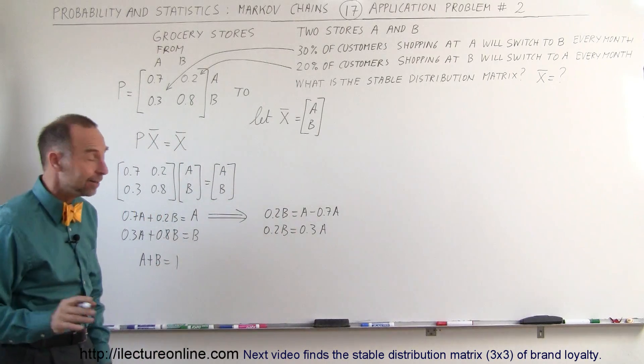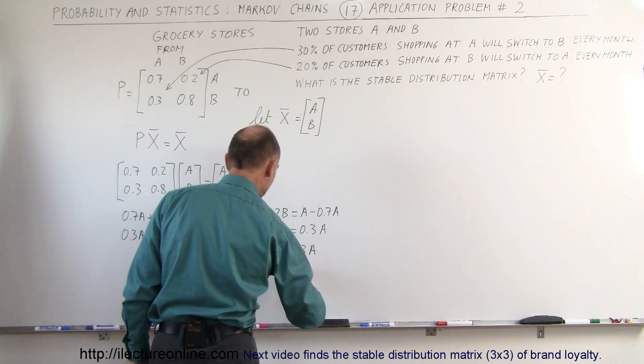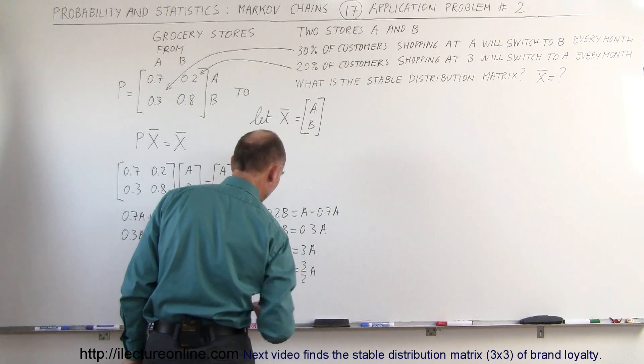If we multiply both sides by 10, we get 2B equals 3A, or B is equal to 3 divided by 2A, 3 over 2A.